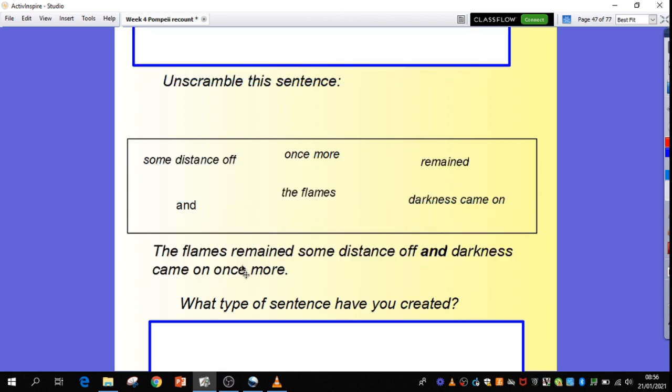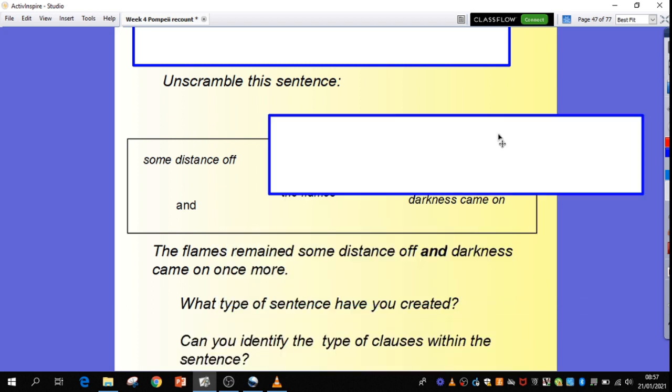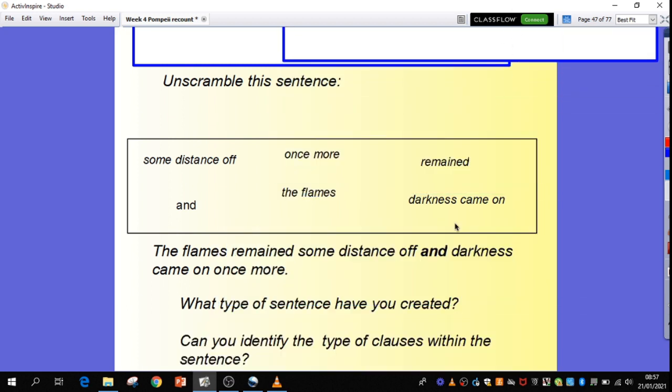Okay, so you should have made this sentence: the flames remained some distance off and darkness came on once more. So, question for you Year 6, what type of sentence have you created there? Say it in your head. Okay, hopefully you've identified that it is a compound sentence because it has a coordinating conjunction and in it.